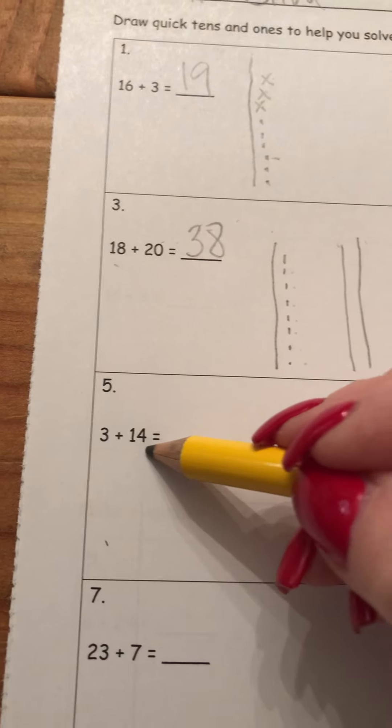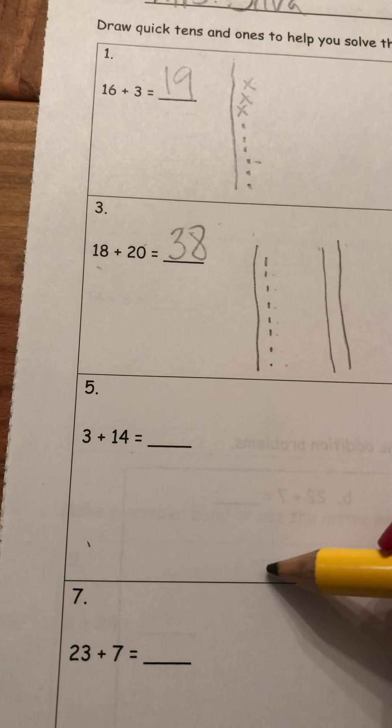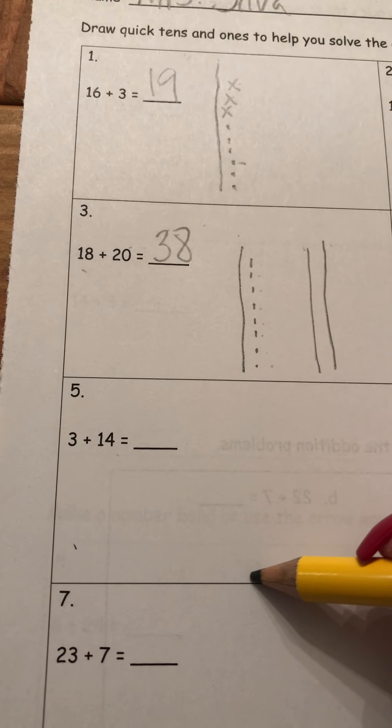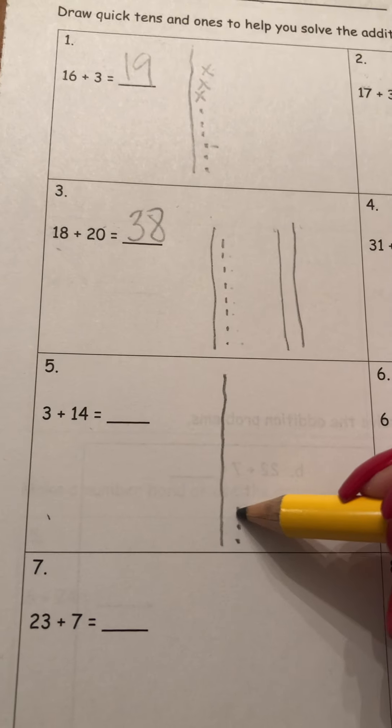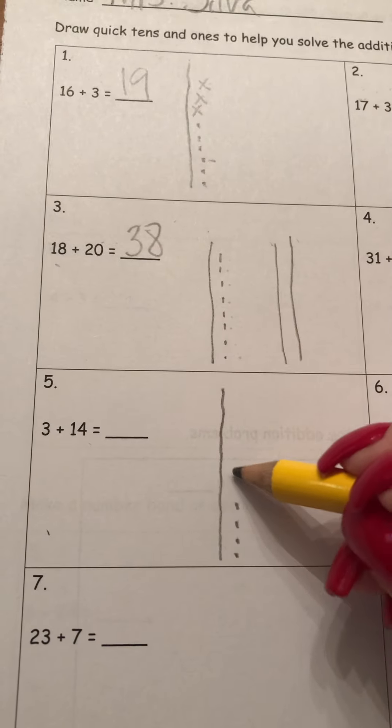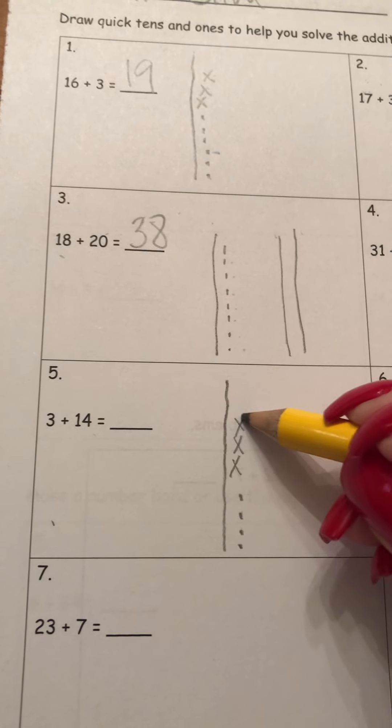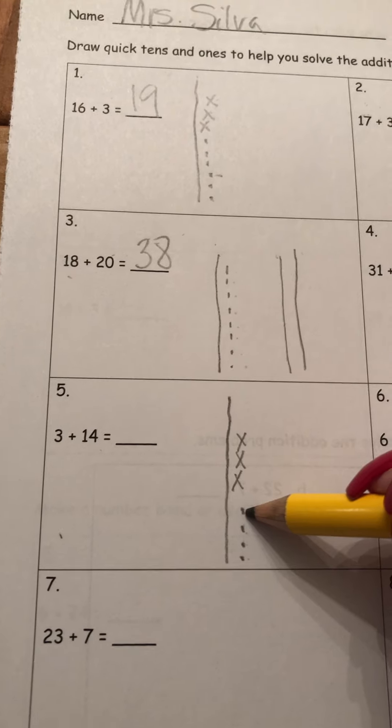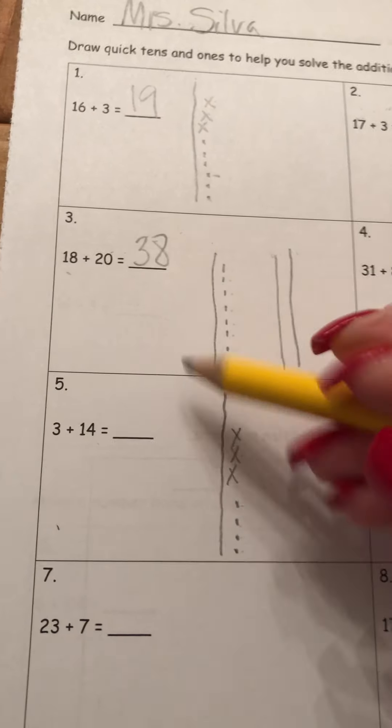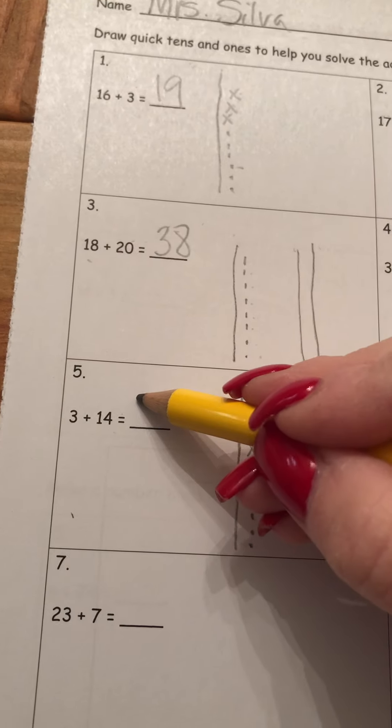Our quick tens, we're going to start with the bigger number because that's easier. And it's 14, so there's my 10 and my 4. One, two, three, four, plus 3 X's. 10, 11, 12, 13, 14, count on. 15, 16, 17. 3 plus 14 equals 17.